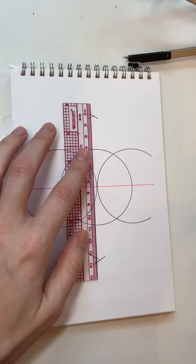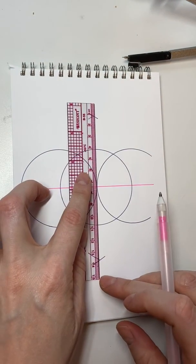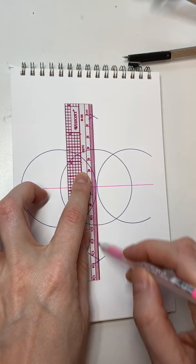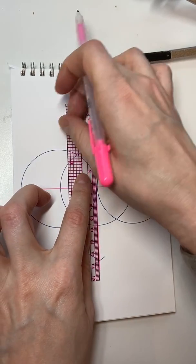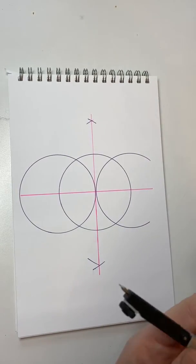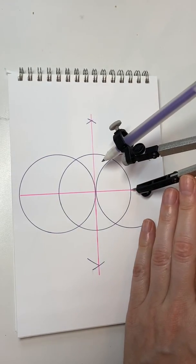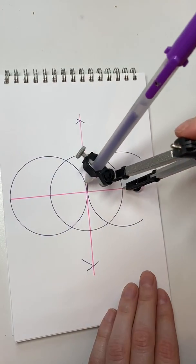Connect those intersections. Oh sorry, turn the light down. Connect those intersections and then we have two new intersections. We're going to close our compass back down to the width that it was already. I'm just going to measure that width right here.